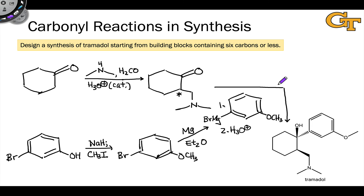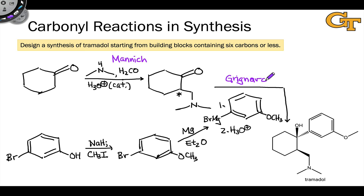And we've done it. Notice that we've used a lot of the reactions seen over the past several units: a Mannich reaction to establish a beta-amino ketone, a Grignard reaction to establish the key tertiary alcohol in the final target, and a Williamson ether synthesis to install a methyl ether in the aromatic starting material.